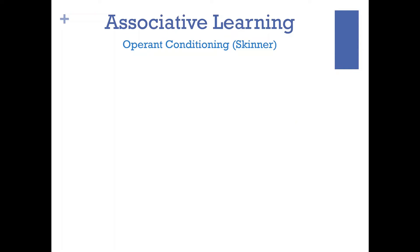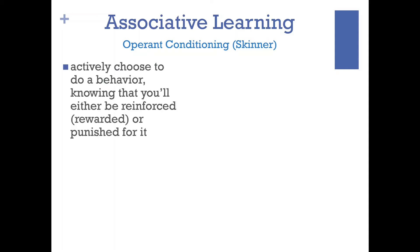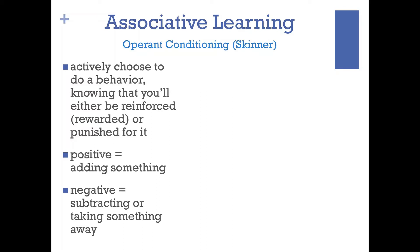Associative learning is another term for pairing two things together — it could be classical or operant conditioning. Operant conditioning was really piloted by B.F. Skinner. Think of the word 'operate' — you're actively choosing to participate in a behavior knowing that behavior will be reinforced or punished. Now we're getting into behavior modification techniques and training. The term 'positive' doesn't mean good, it means addition. The word 'negative' doesn't mean bad — it means subtracting or taking away, eliminating something.